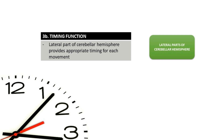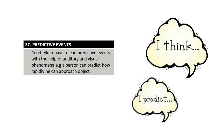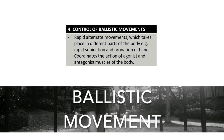Timing function: the lateral part of the cerebellar hemisphere provides appropriate timing for each movement. Predictive events: the cerebellum has a role in predictive events with the help of auditory and visual phenomena. For example, a person can predict how rapidly they can approach an object. Control of ballistic movements: rapid alternating movements which take place in different parts of the body — for example, rapid supination and pronation of the hands, like dancing movements. The cerebellum coordinates the action of agonist and antagonist muscles of the body.